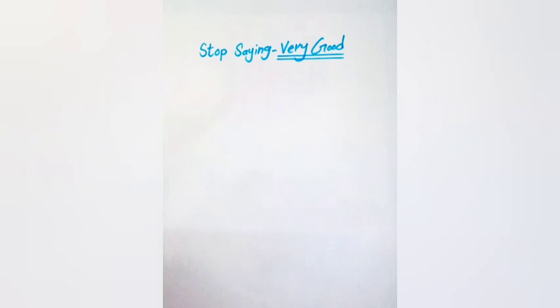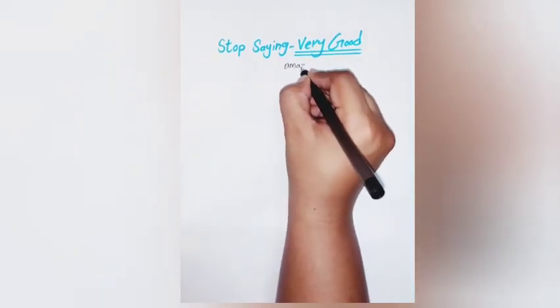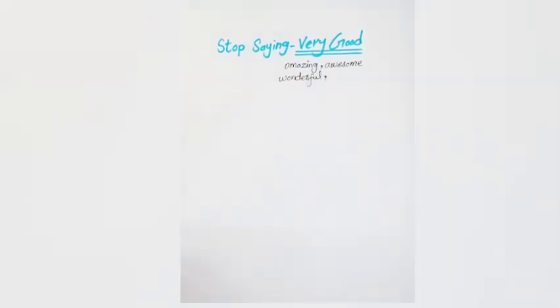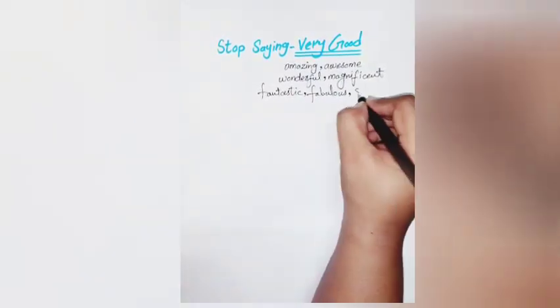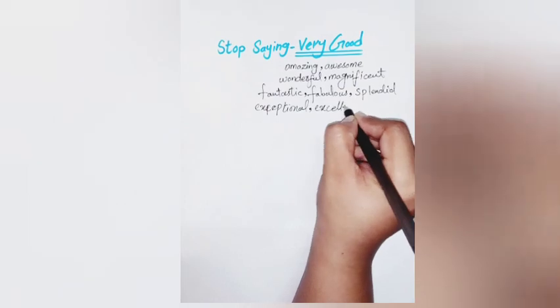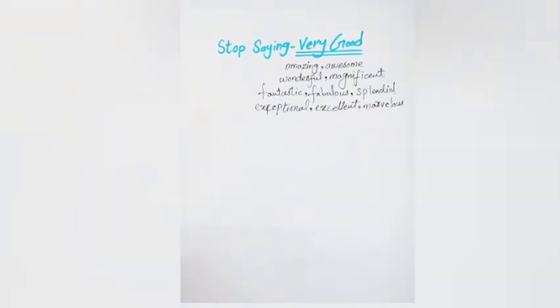Stop saying 'very good.' We use the word good so much, and of course we need it, but sometimes it can be too simple. In its place, if we want to say 'very good,' we could say: amazing, awesome, wonderful, magnificent, fantastic, fabulous, splendid, exceptional, excellent, or marvelous. They are pretty much interchangeable and can all be applied to many contexts.